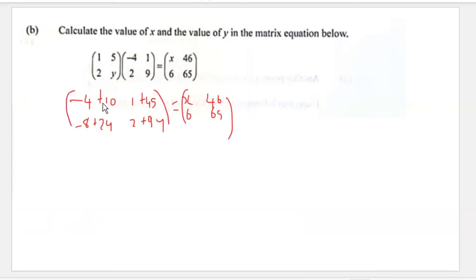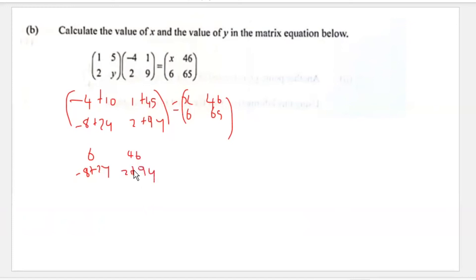Simplifying: negative four plus ten gives six; negative eight plus 2y remains as is since there's an unknown; one plus 45 gives 46; two plus 9y stays the same. So the resulting matrix equals x, 6, 46, and 65, allowing us to equate corresponding entries.